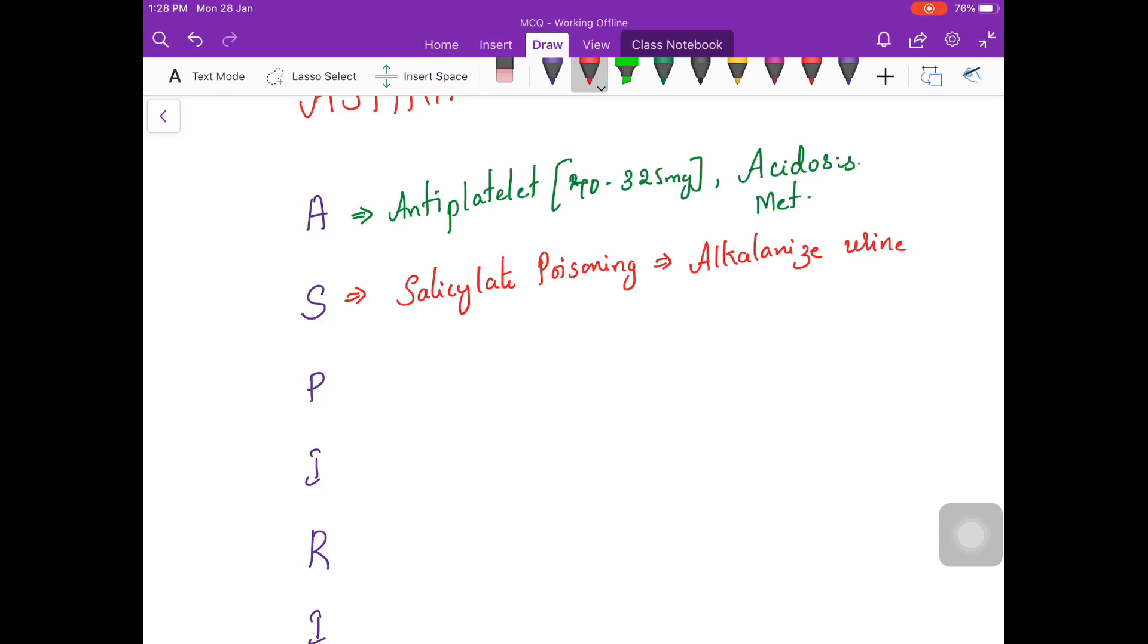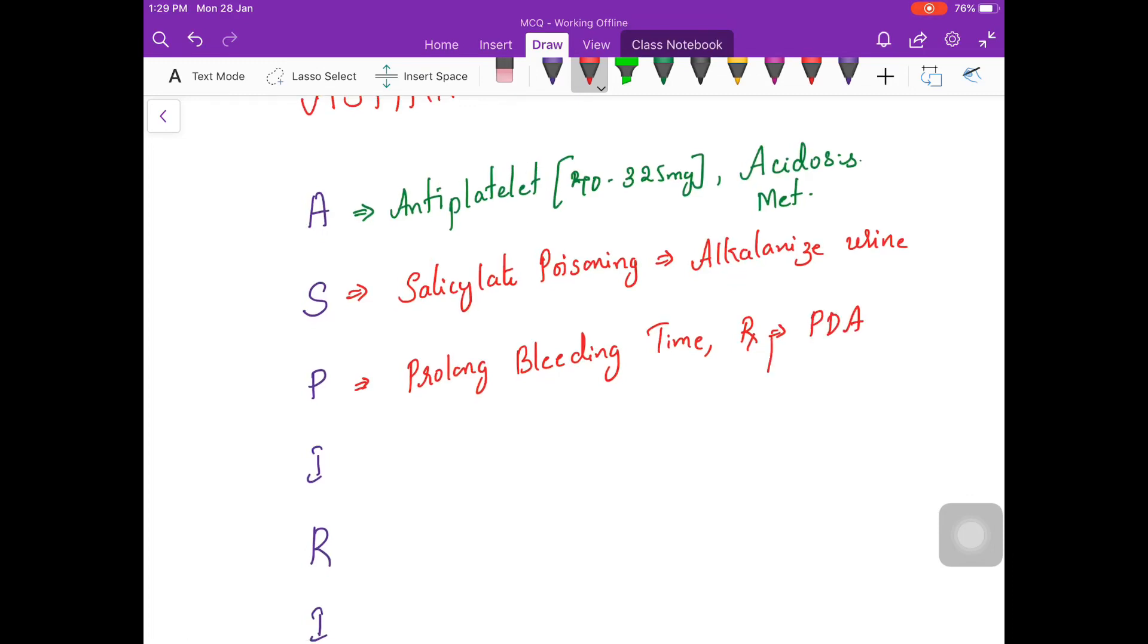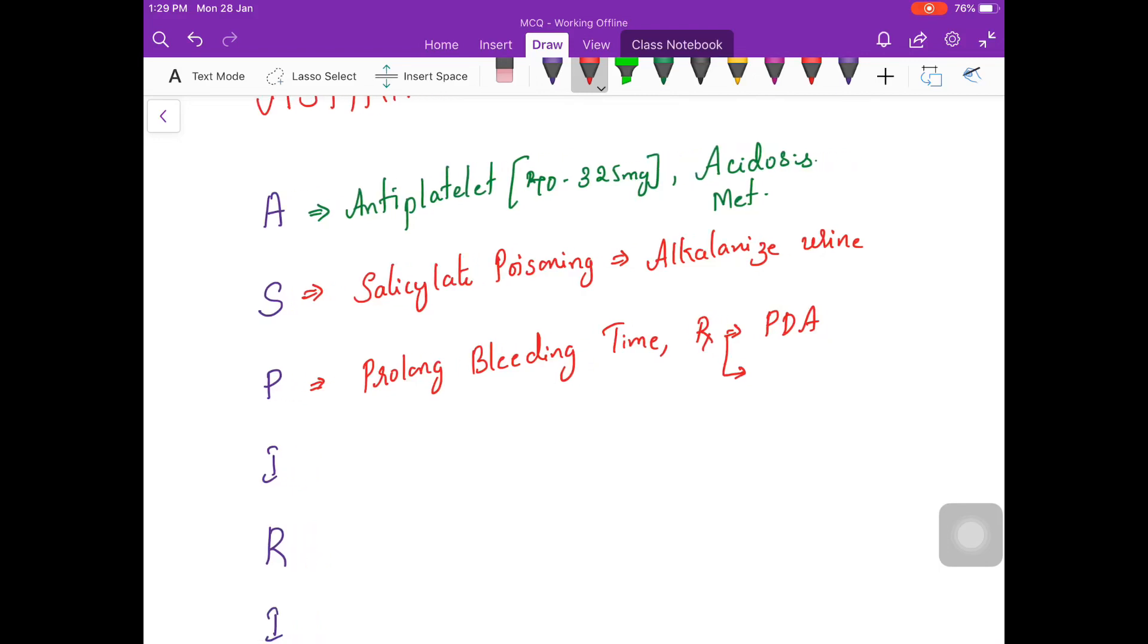Now along with that, P stands for when you use aspirin it will prolong bleeding time because it is an antiplatelet drug. It prolongs bleeding time and also it is used in closure of patent ductus arteriosus. And nowadays they have found it is also useful in certain conditions like preeclampsia and also it is useful in prevention of which cancer? Colorectal cancer.